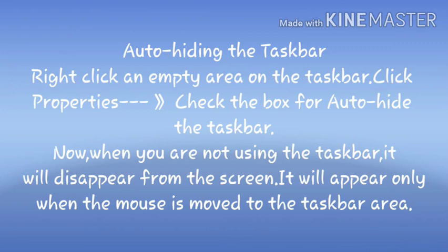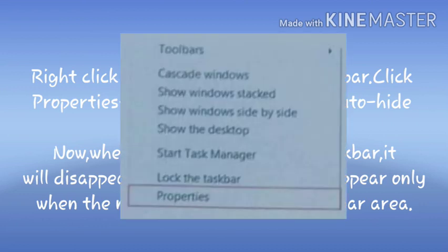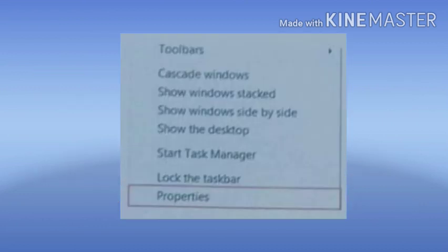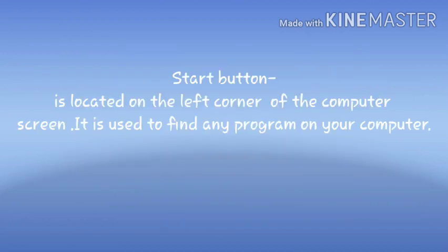Now when you are not using the taskbar it will disappear from your screen. It will appear only when the mouse is moved to the taskbar. Next, the Start button: the Start button is located on the left corner of the computer screen.